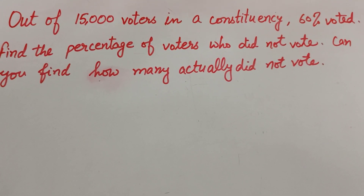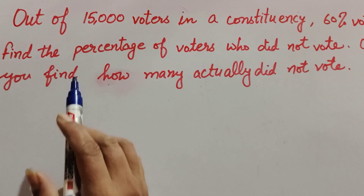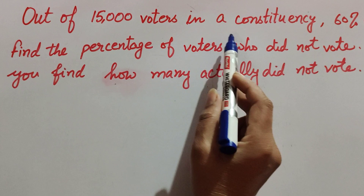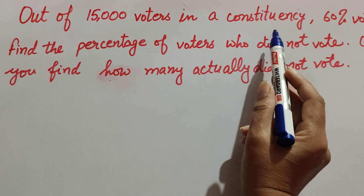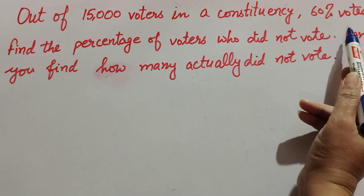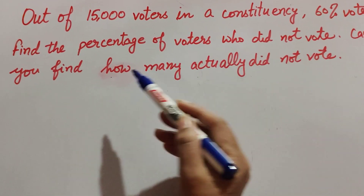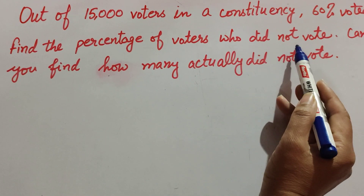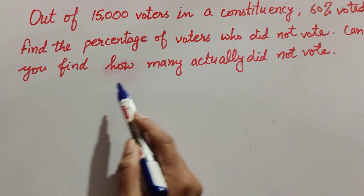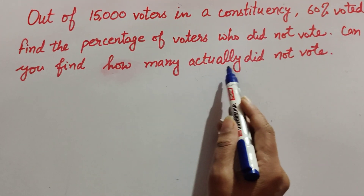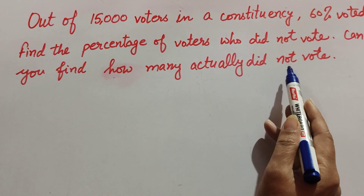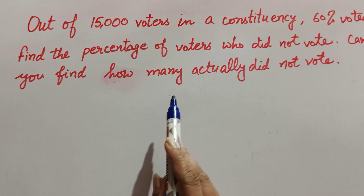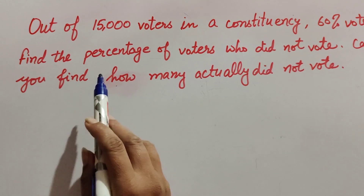Hello friends, welcome to my channel. In this video we discuss: out of 15,000 voters in a constituency, 60% voted. Find the percentage of voters who did not vote. Can you find how many actually did not vote in this?